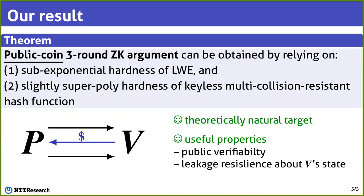Additionally, since our zero-knowledge argument is public coin, it automatically satisfies several useful properties such as public verifiability — meaning that anyone other than the verifier can also check whether a transcript is accepting or not — and it also satisfies leakage resilience about the verifier's secret state, since the verifier does not have any secret state in a public coin protocol.